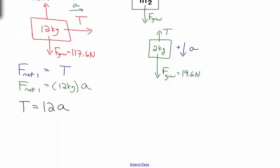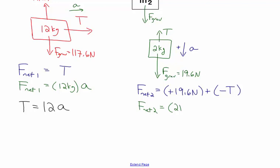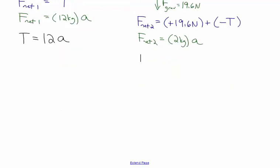When I look at the net force on mass 2, I need to add the individual forces together and pay attention to positive and negative directions. Because down is the positive direction for mass 2, the force of gravity — 19.6 Newtons — is in the positive direction, and the tension T is in the negative direction. So the net force is positive 19.6 plus negative T. Newton's second law tells me that equals 2 kilograms times acceleration A, giving me: 19.6 minus T equals 2A.